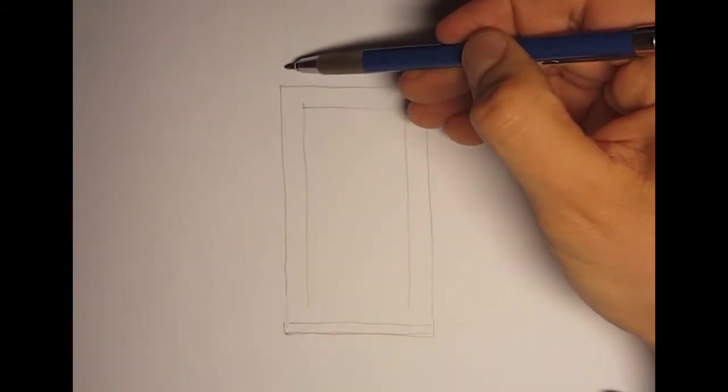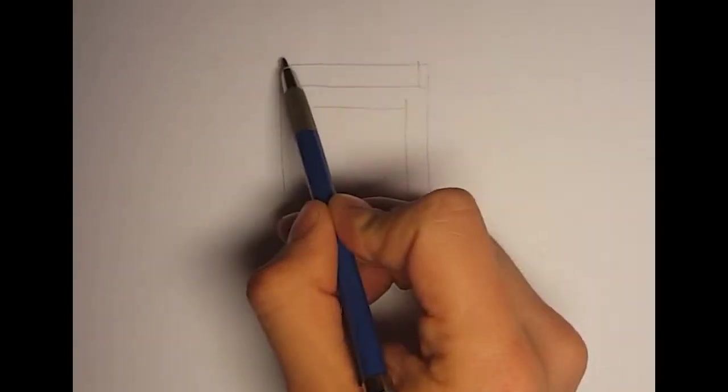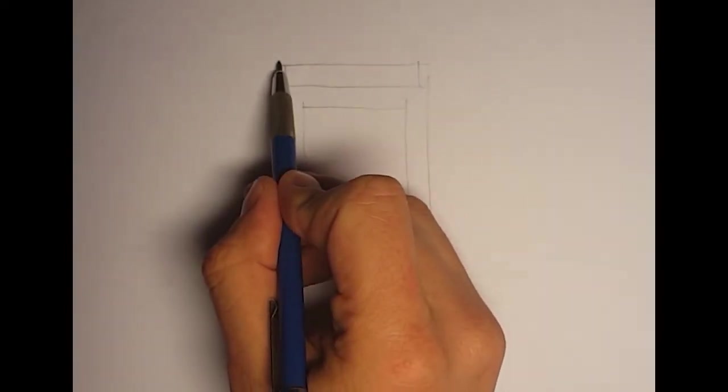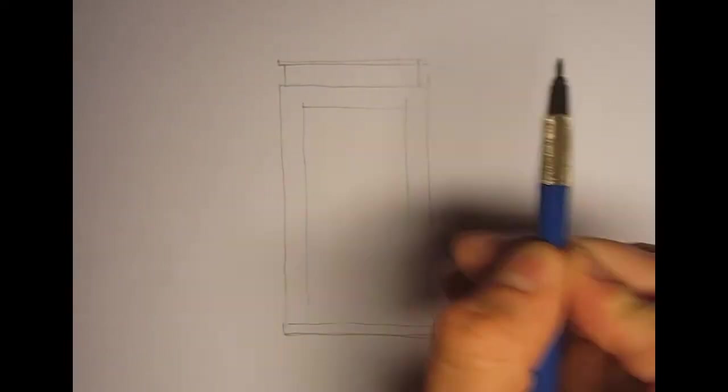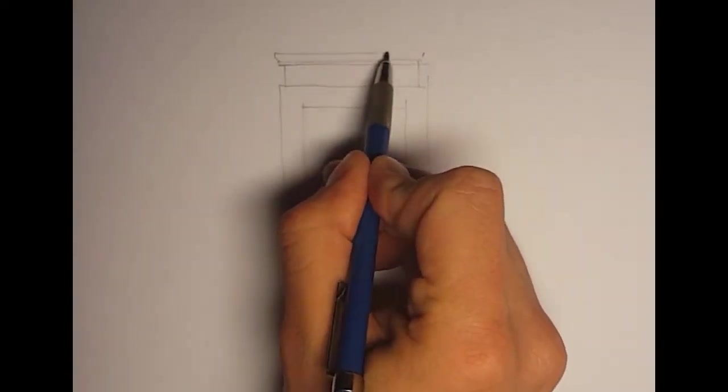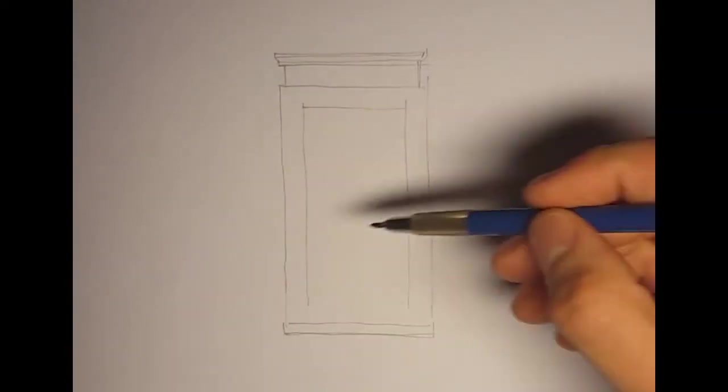This is going to have a small ledge on the bottom and an incomplete pediment on top. The pediment would be a sort of triangular thing on the top of this element, but I'm not going to draw that because it's not that common in Georgian style.